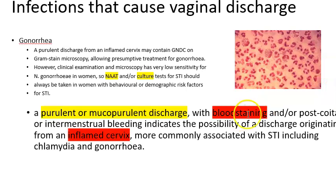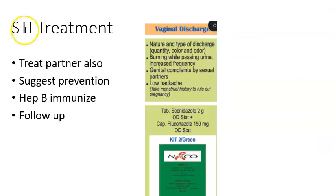Chlamydia is similar to gonorrhea — also an STI presenting with purulent or mucopurulent discharge, blood staining, and bleeding.